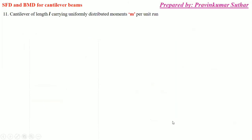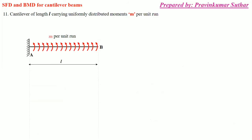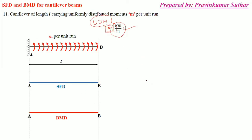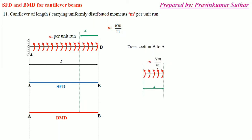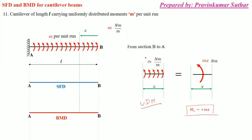Next, case 11: a cantilever beam of length l having a uniformly distributed moment (UDM). Continuously distributed point moments are there at the same rate. The unit is newton-meter per meter. We will convert this UDM into a point moment. The value of the equivalent point moment will be Mx — simply take the moment rate m multiplied by x — giving Mx, with units of newton-meter.